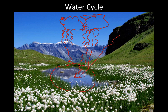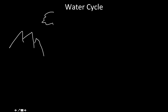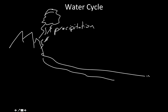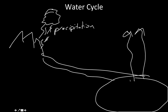This continues until enough clouds collect for precipitation to happen again. From a biological sense, we need to know a few more things about the water cycle. We have our mountains, clouds, precipitation, streams, lakes, ponds, rivers, and water evaporating back into the atmosphere. All of this we've talked about so far is abiotic.